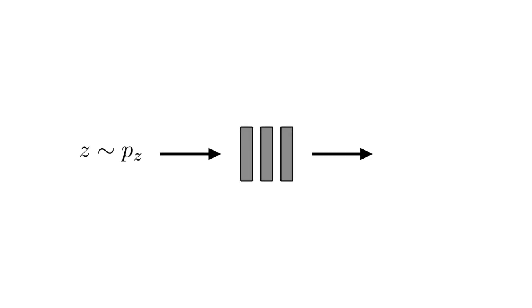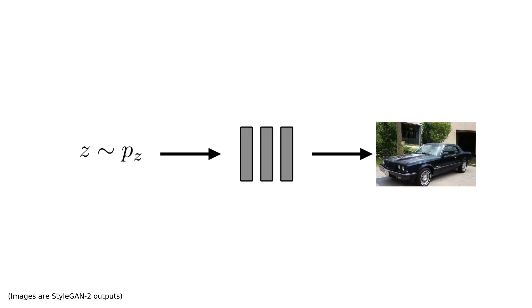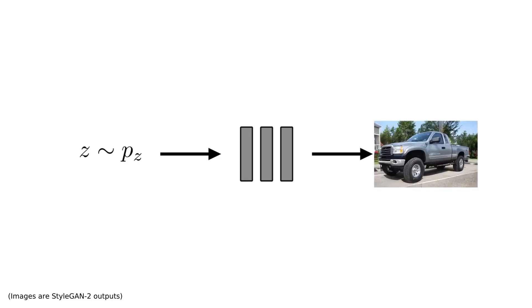If we now go back to our setup and sample a new latent code from our prior distribution, we get out a new image of a car. We can repeat this process and get millions of images of new cars.